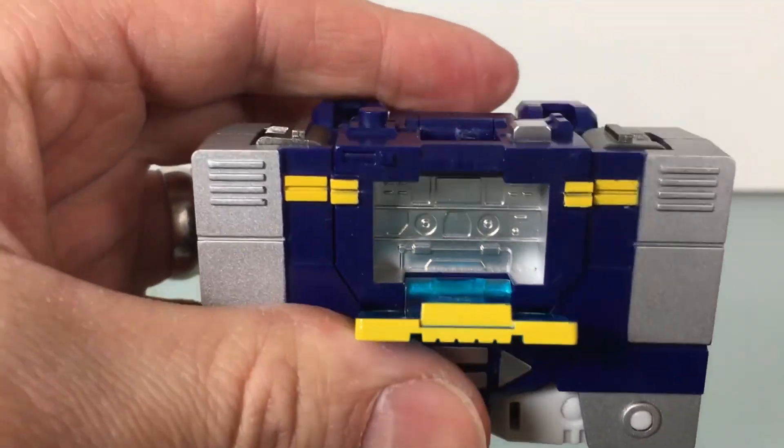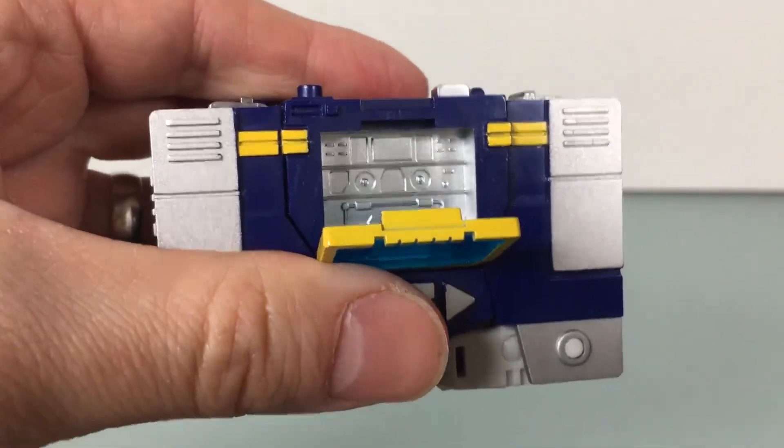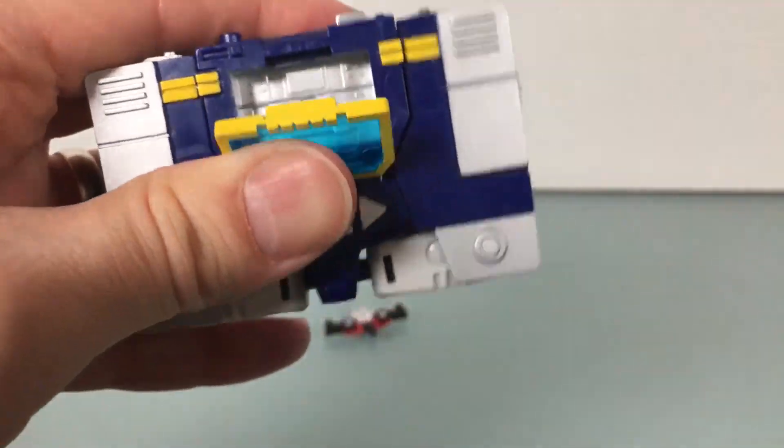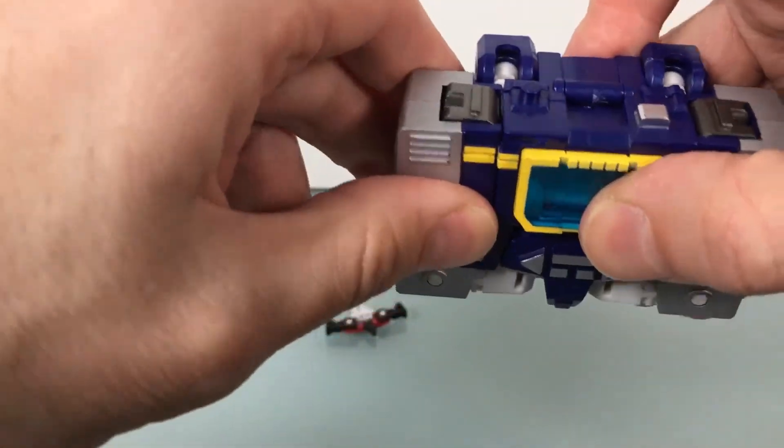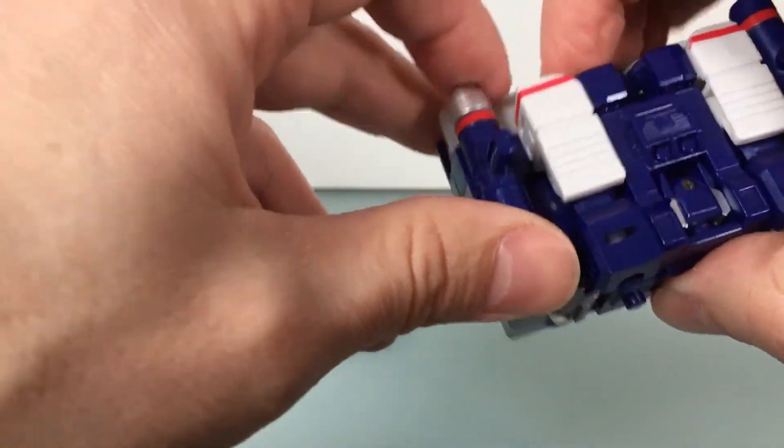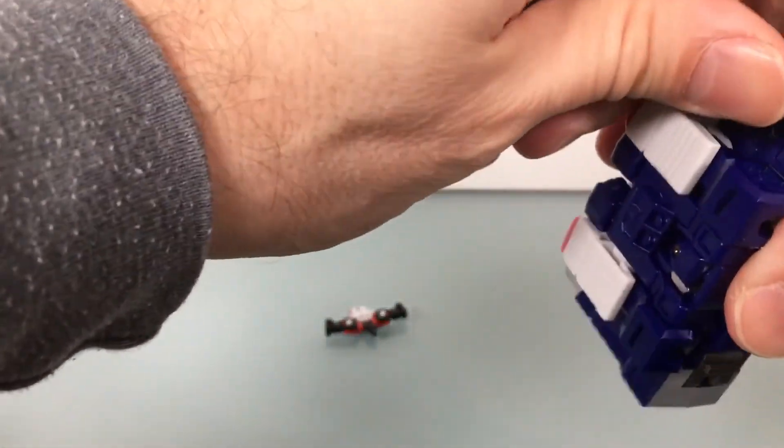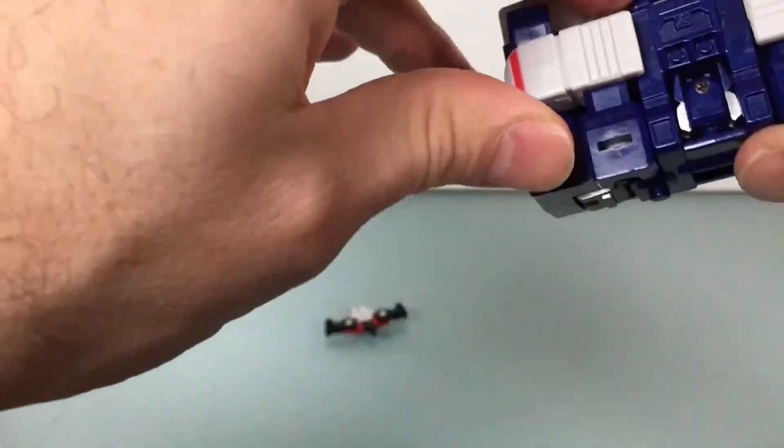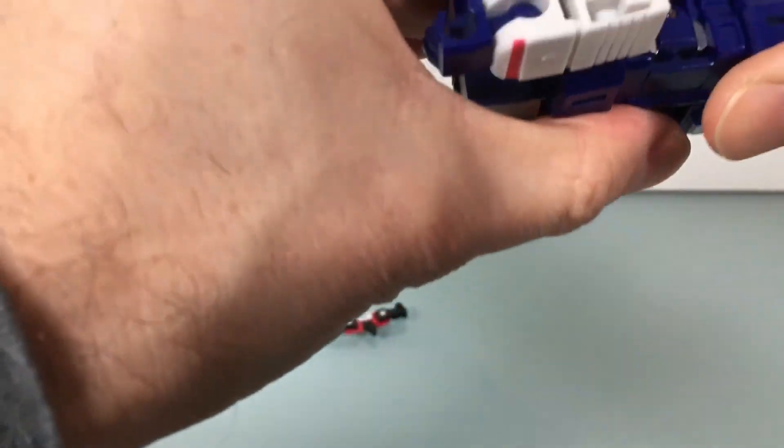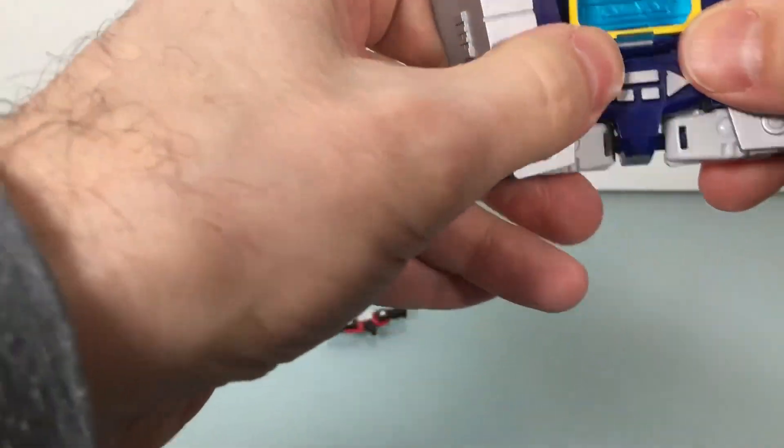But, on the inside you see some molded detail, which is nice. Done in silver. So, that's pretty cool. The translucent blue here is really nice as well. Not bad. So, let's transform this guy up if I can remember how to do it. First thing you want to do is you want to take out his weapons. We'll look at those in a moment.